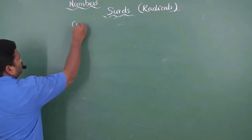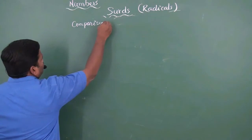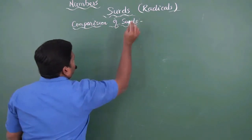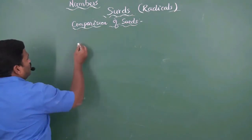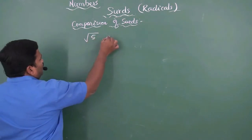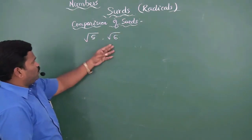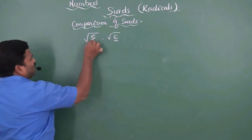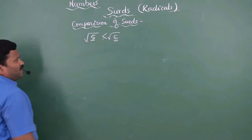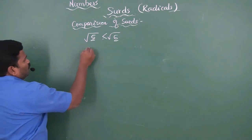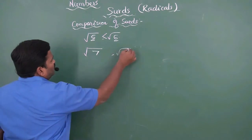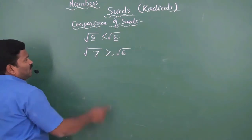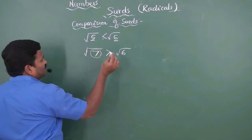Comparison of sets. Let us see two examples. Root 5 and root 6 — which is the greater and which is the smaller? Definitely 6 is more than 5, therefore root 6 is greater than root 5. Similarly, root 7 and root 6 — which is greater? Obviously root 7 is greater than root 6, because 7 is greater than 6.